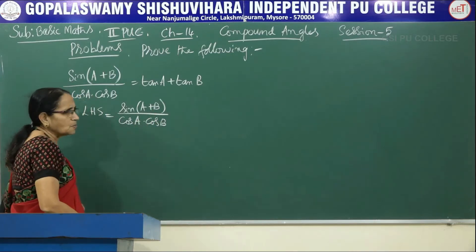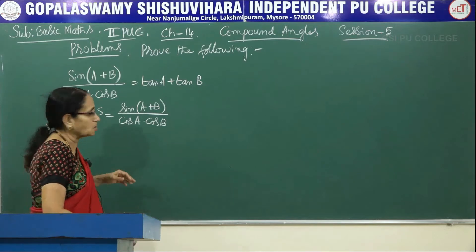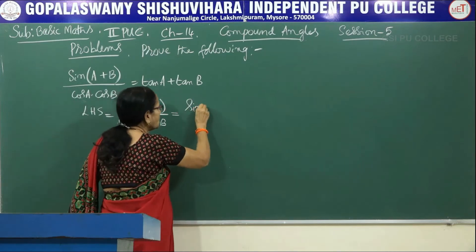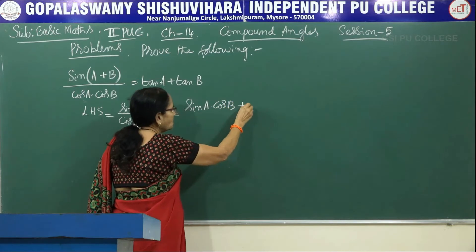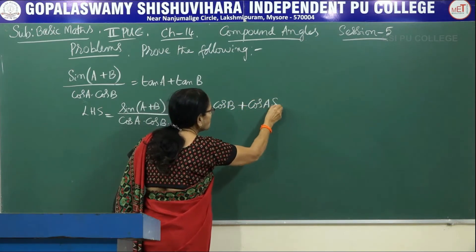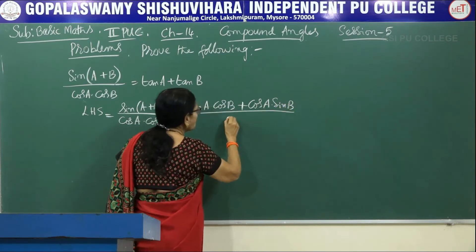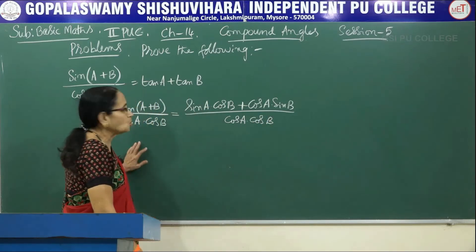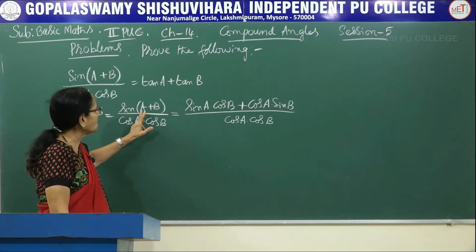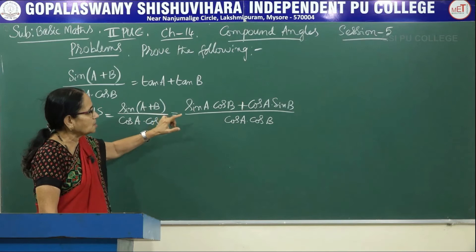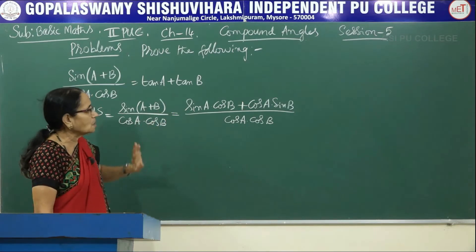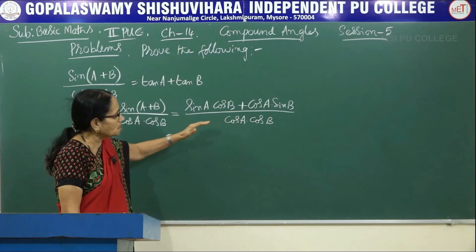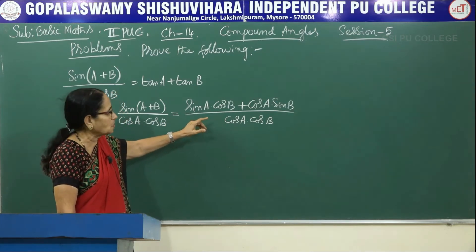The answer can be obtained in two steps, so this can be expected as a two-mark question. Now let me expand sin(A+B) using the basic formula: it is sinA·cosB plus cosA·sinB. Write the denominator as it is — cosA·cosB.